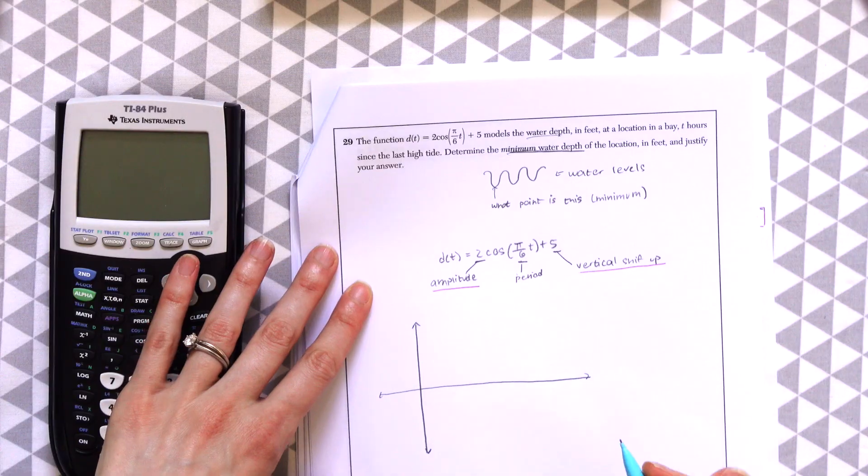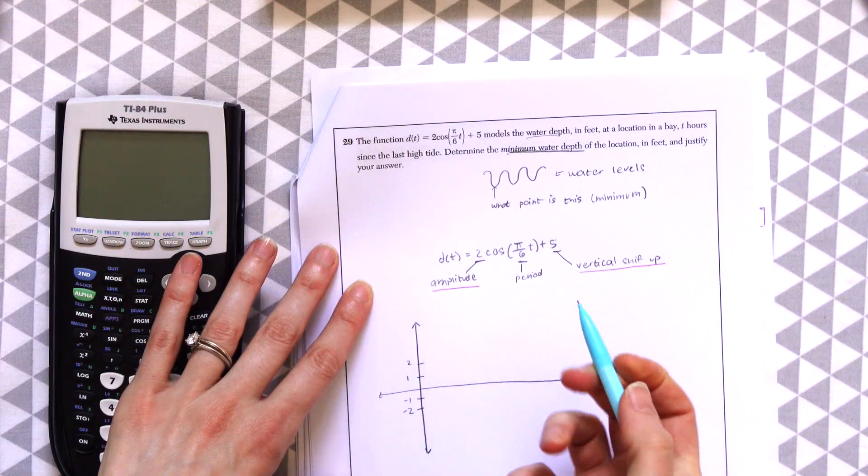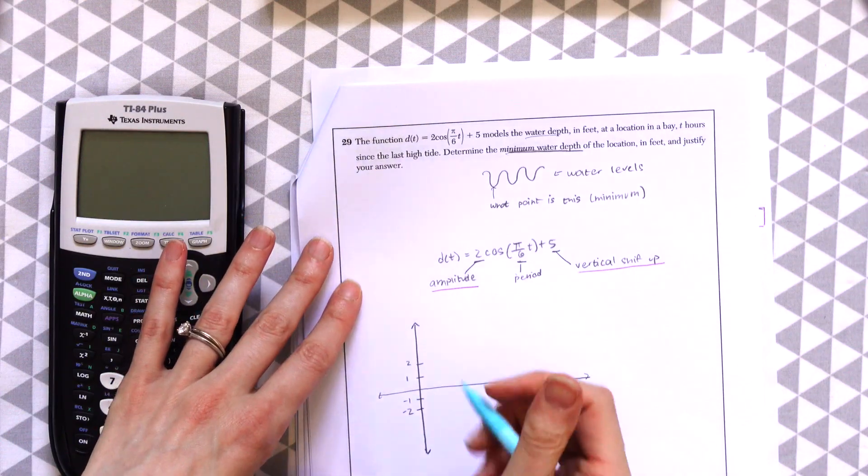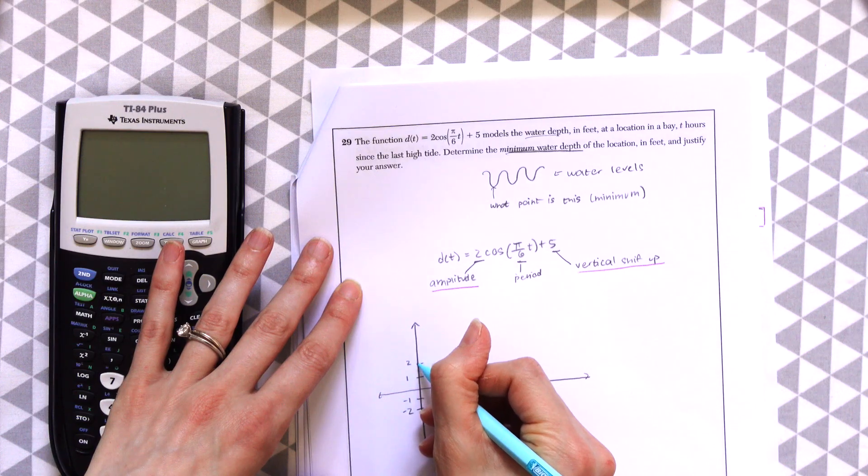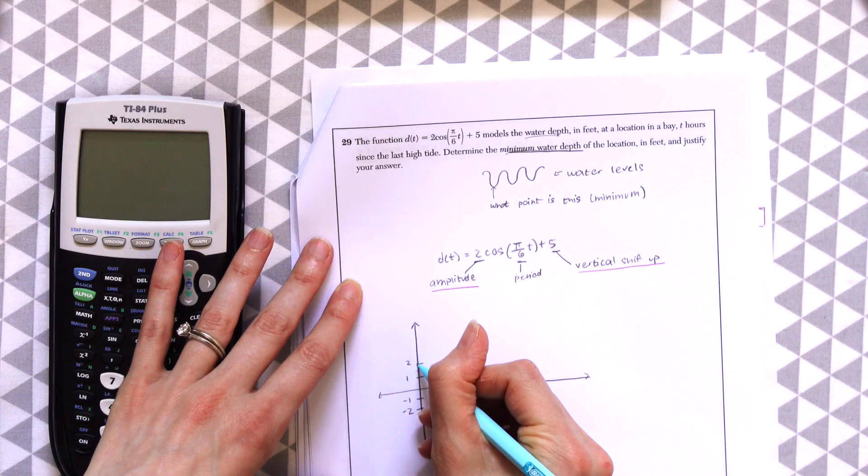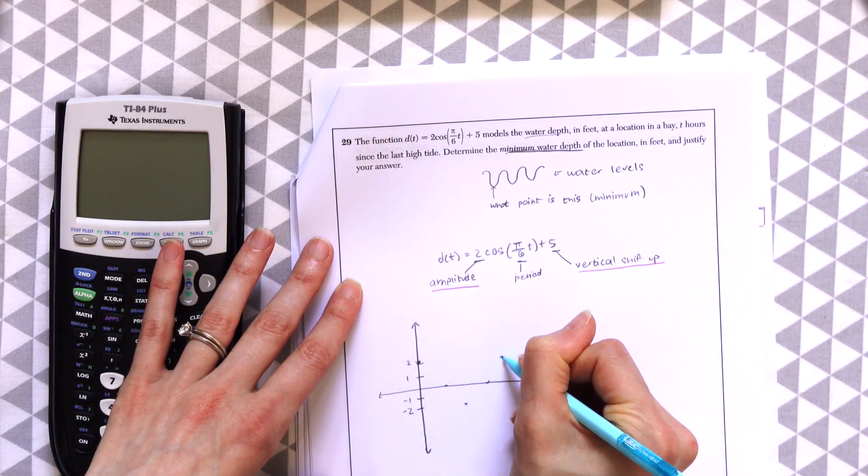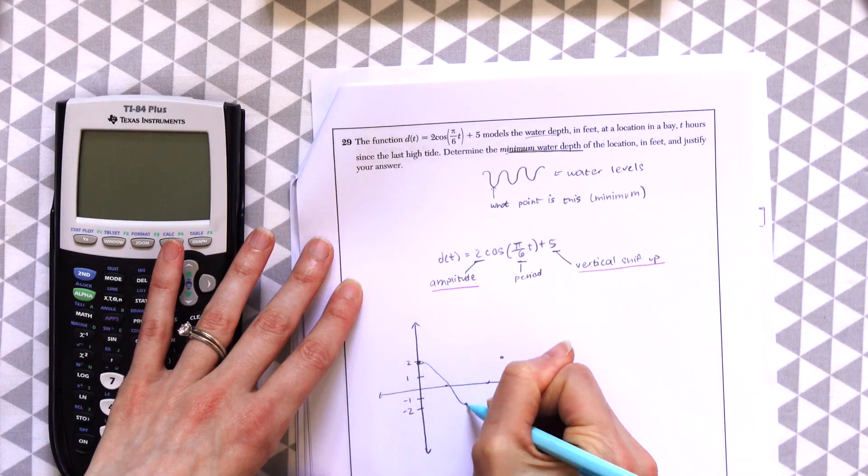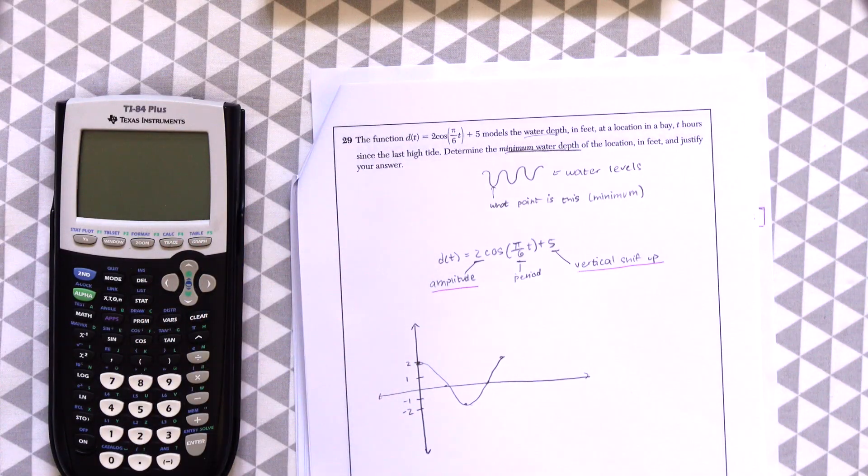So if I just started to draw out this trig function, the amplitude is where a graph usually starts unless there's a vertical shift up. And in this case there is. So usually we would start a cosine function at 2. So here's like a rough drawing of our trig function. And notice that the minimum number goes to negative 2.